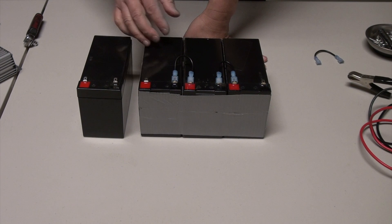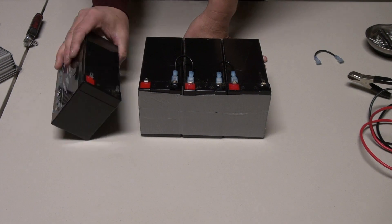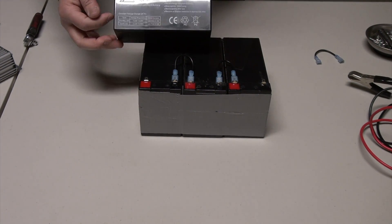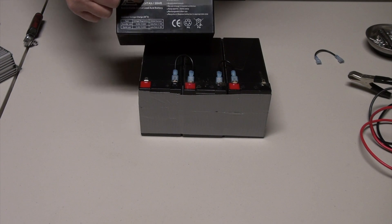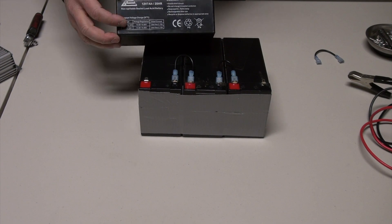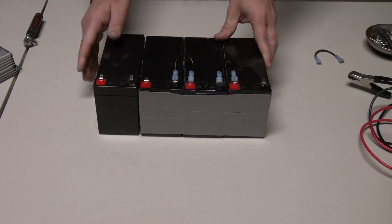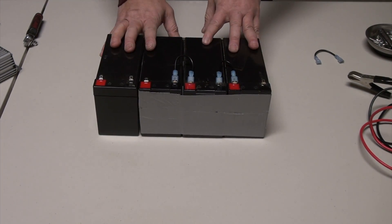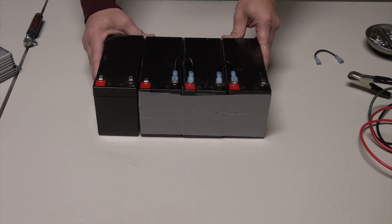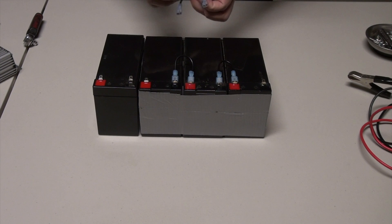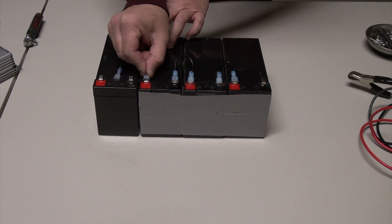So these batteries have the same kind of volts and amp rating. Each of these batteries runs on 12 volts, but it has like a 7 amp-hour rating. So you want each of the battery to have the same amp rating so that the power can distribute evenly when you run the motor.